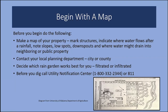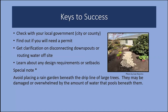Before you dig, don't forget to call the utility notification center. The key to success is checking with your local government — city or county — to find out if you need a permit, get clarification on disconnecting downspouts or routing water off-site, and learn about any design requirements or setbacks. Also, if you have large trees on your property and the perfect site for a rain garden is right beneath them, think carefully — you may not wish to disturb their roots or create more water than they're normally accustomed to.